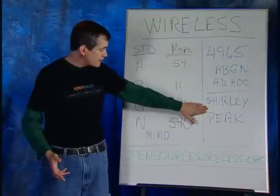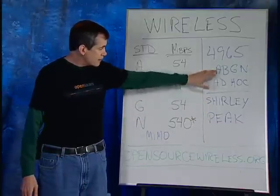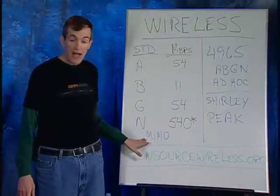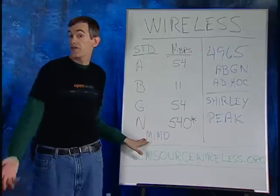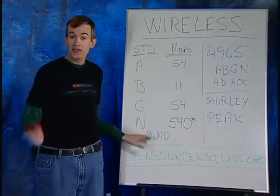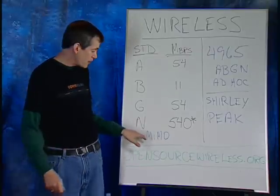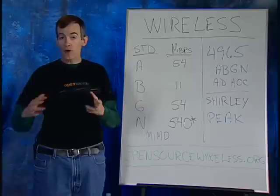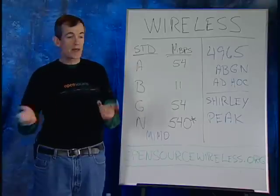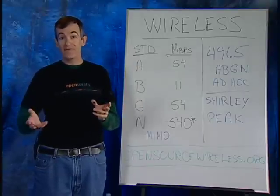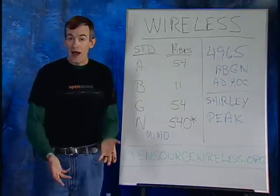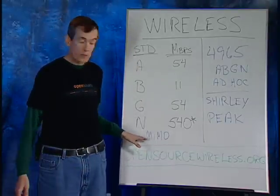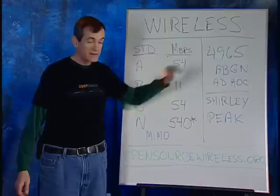Shirley Peak has the same standard support, but it actually has more channels for MIMO — more inputs and outputs — so you'll actually be able to have even higher 802.11N support than the 4965.